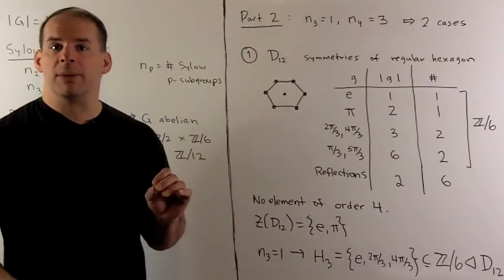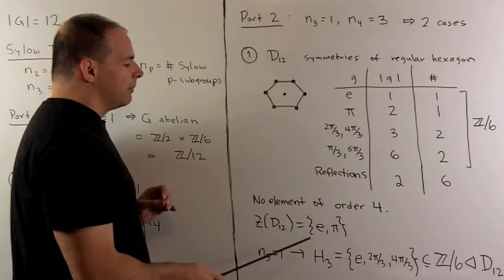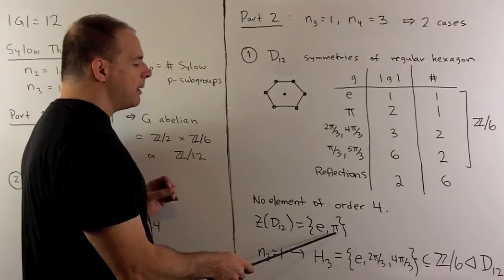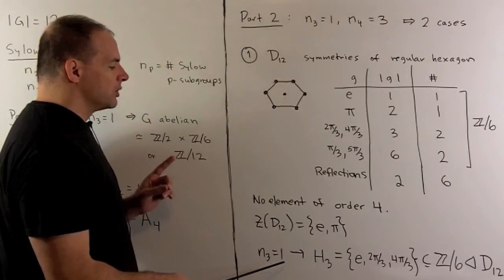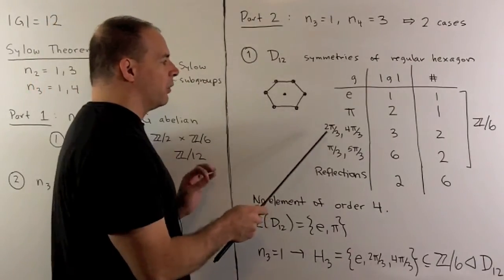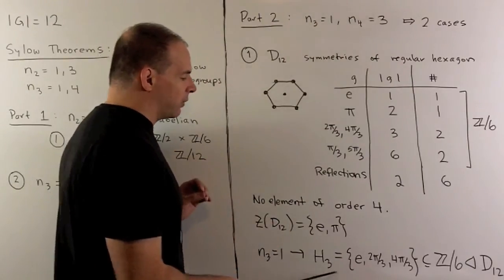We have no group elements of order 4. The center is going to be given by the identity and rotation by pi. And we note n sub 3 equals 1. So if we take the identity and both elements of order 3, that's going to give us our unique Z mod 3.